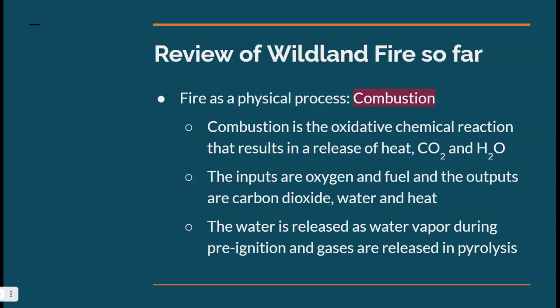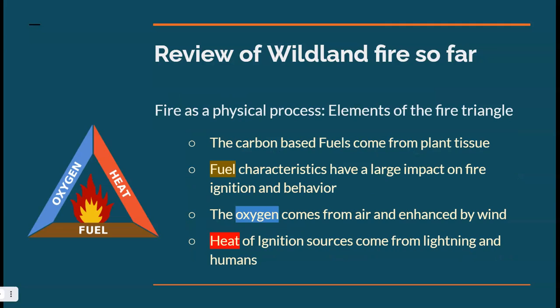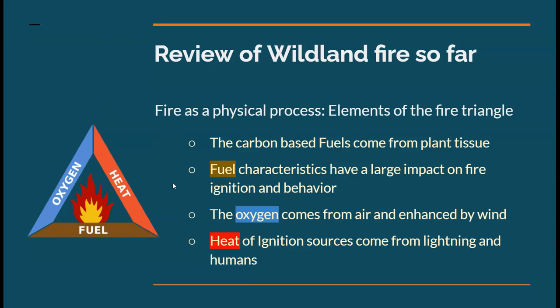Just to refresh your brain before we get to the final. Now we go to the fire triangle: our triangle requires fuel, oxygen, and heat — those are the elements needed for that combustion process to happen. Oxygen is going to come from the air, and we've learned through talking about fire behavior how it's enhanced by wind. And then heat — as we talked about ignition sources, how lightning works and how humans can cause fires as well.